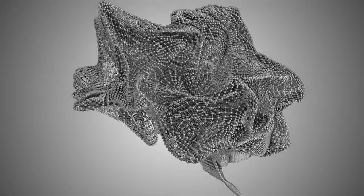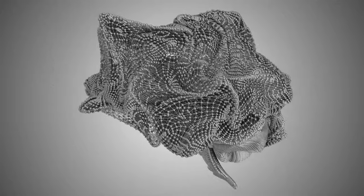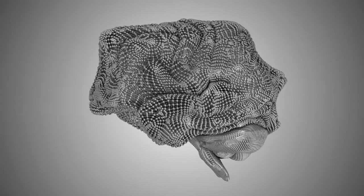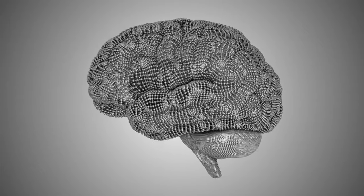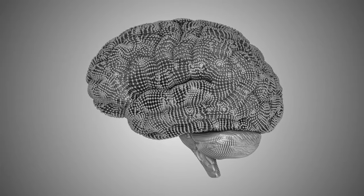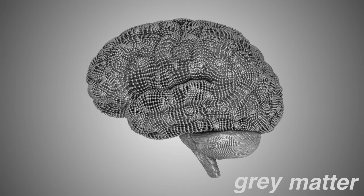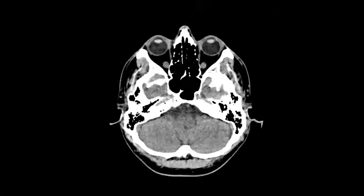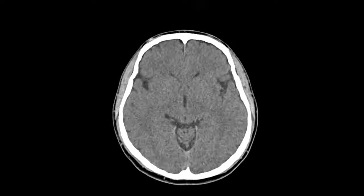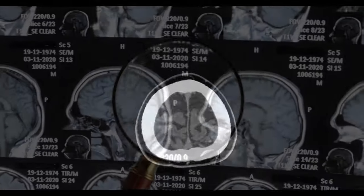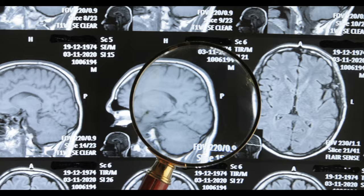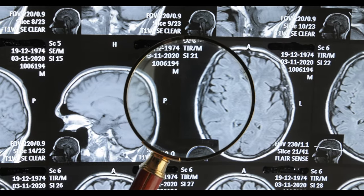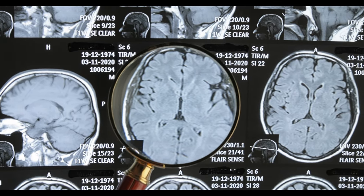I was thinking about my brain — or you could say my brain was thinking about itself. It occurred to me that we also call our brains gray matter, which is scientifically incorrect because gray matter makes up only 40% of the brain, while the other 60% is actually made of white matter.